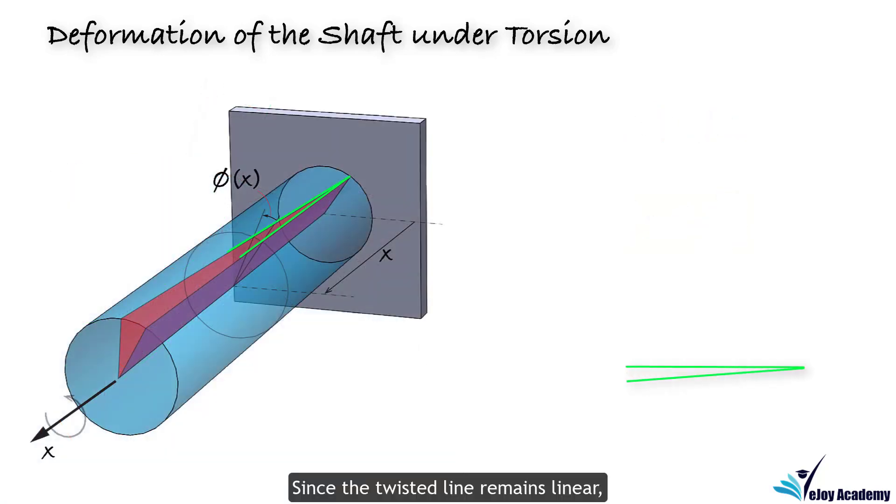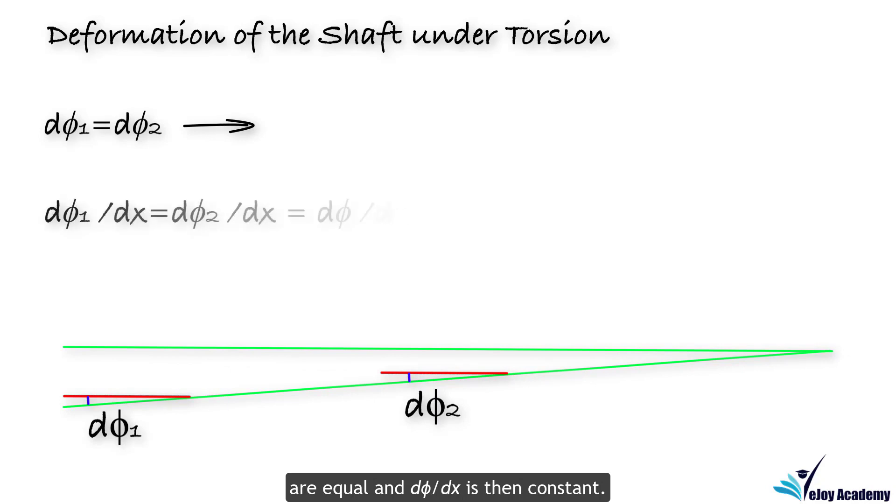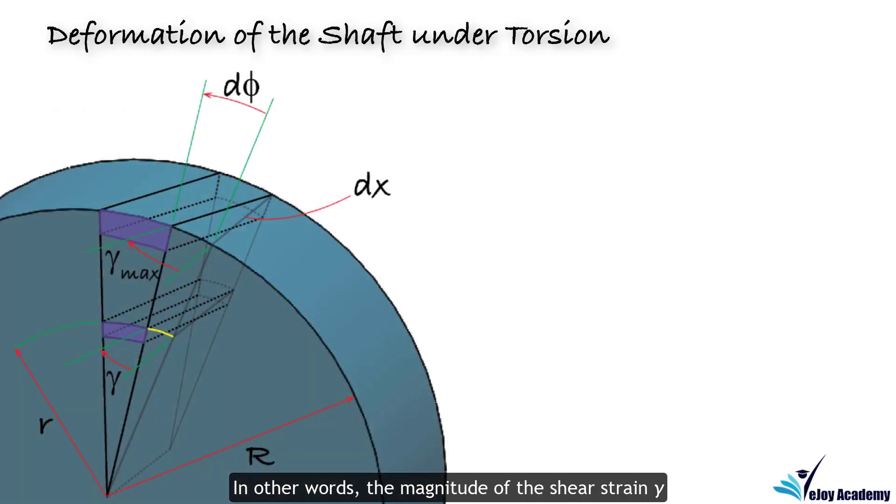Since the twisted line remains linear, it is seen that both angles d phi 1 and d phi 2 are equal and d phi over dx is then constant. In other words, the magnitude of the shear strain angle gamma only varies with its radial distance r from the axis of the shaft.